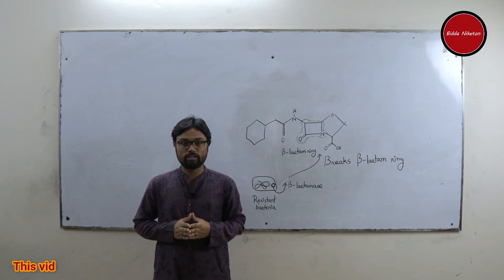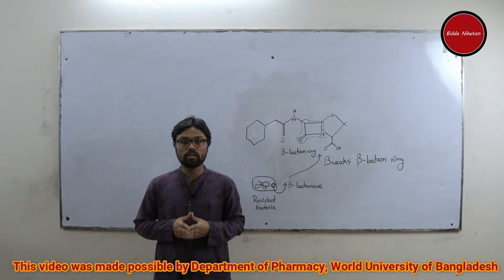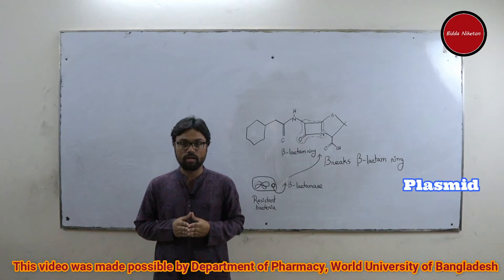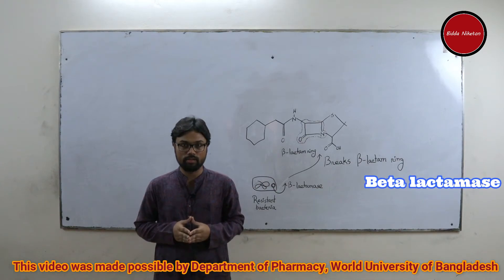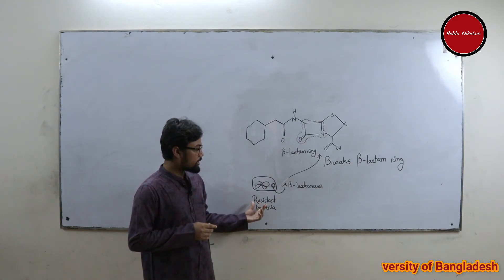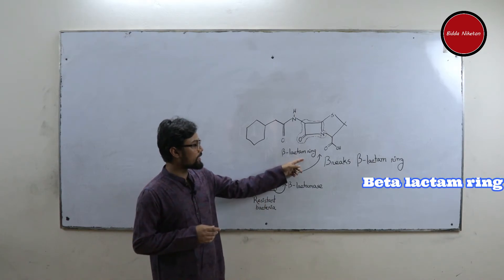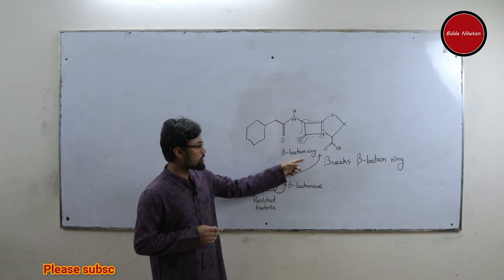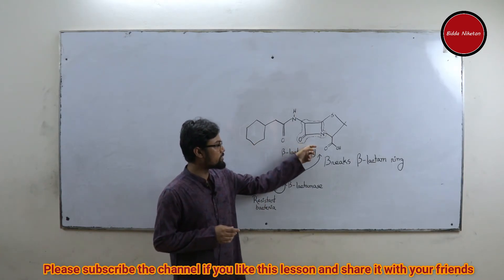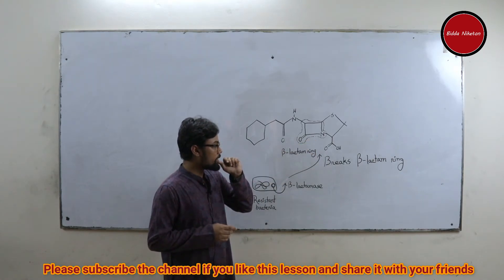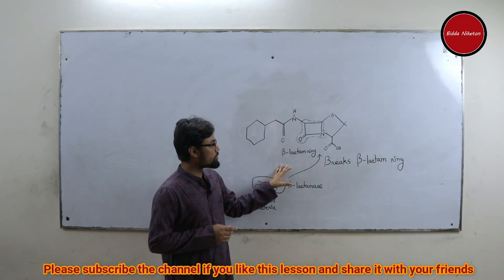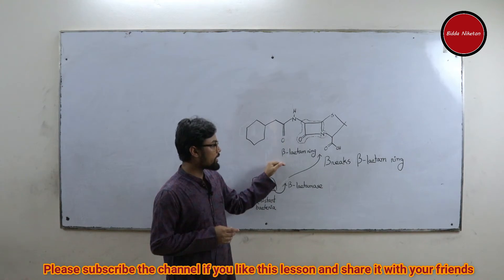Some bacteria have a special extra-chromosomal DNA known as a plasmid. Some of these plasmids carry the gene to produce an enzyme named beta-lactamase. The beta-lactamase enzyme from these bacteria can break the beta-lactam ring of the penicillin structure. Here we see the structure of penicillin, which contains a specific ring called the beta-lactam ring. Destruction of the beta-lactam ring results in the destruction of penicillin, rendering it unable to work against the bacteria.